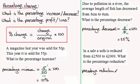Well, it's gone from £2,500 down to £2,000. So it's been reduced by £500. So it's £500 compared with what it was originally, which was £2,500. And we want to know what this fraction is then of 100.